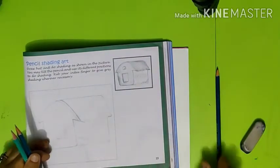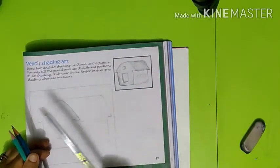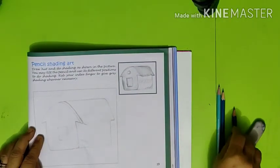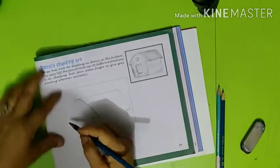6B is used for darker shading. So first, copy the picture on the space given below. Now observe how I am holding the pencil.